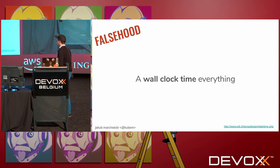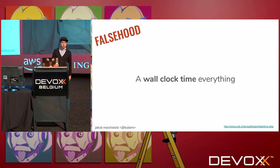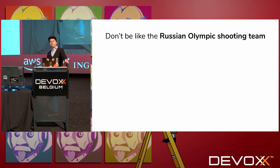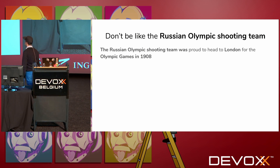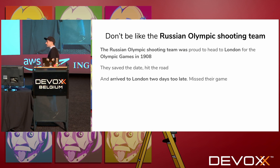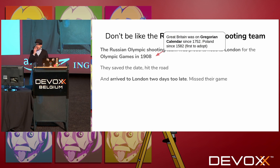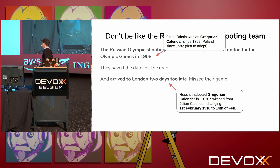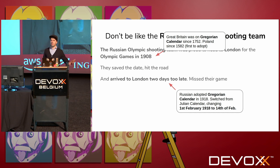But that can bring us to another falsehood: that we can use wall time for everything. That's one of the approaches, but then there is a fair chance you'll end up like the Russian Olympic shooting team in 1908. For the London Olympic Games they were invited, they wanted to go, so they wrapped up their stuff, saved the date, hit the road, and arrived too late — missing their event. Not because traveling from Russia to London takes ages or they had a flight delay. No — they didn't take Ryanair. Great Britain had been on the Gregorian calendar since the 18th century; however, Russians switched to the Gregorian calendar in 1918, shifting 14 days. In 1908 they were still on the old calendar, so they stuck to the wrong wall clock.